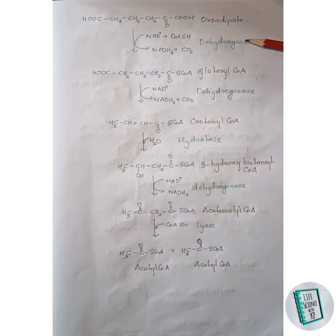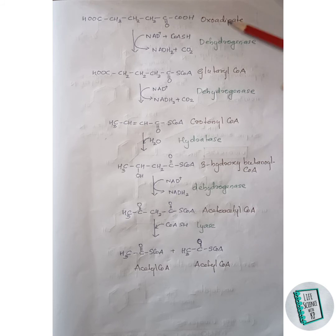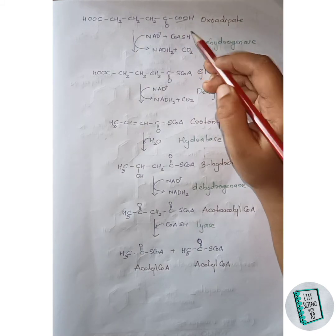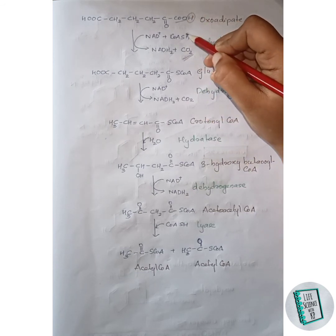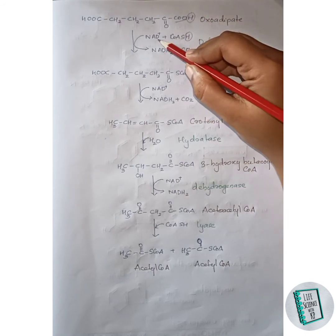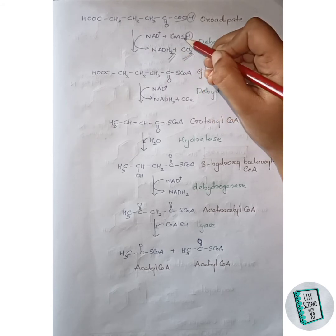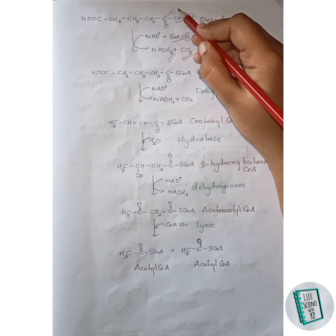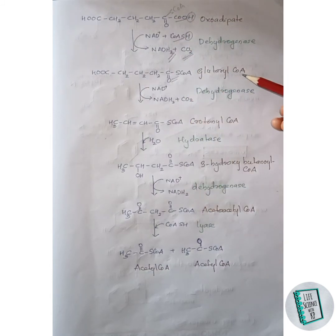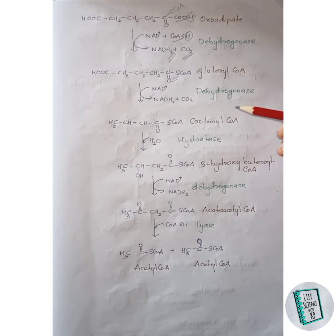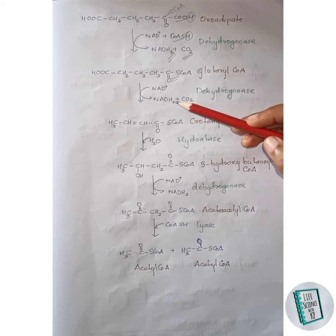Oxoadipate then in the presence of dehydrogenase enzyme forms glutaryl-CoA. The CO group is released as CO2. A hydrogen along with the hydrogen of CoA-SH is released with NAD+ as NADH2, and S-CoA joins to this carbon forming a bond. Thus glutaryl-CoA is formed.